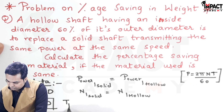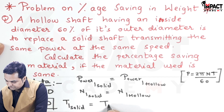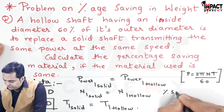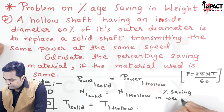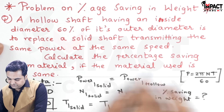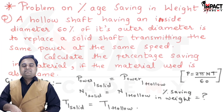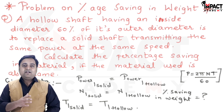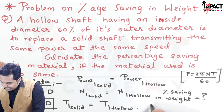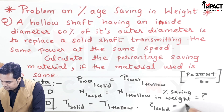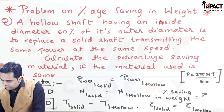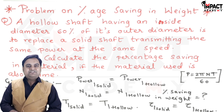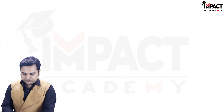The torque transmitted by the solid shaft is the same as the torque transmitted by the hollow shaft. We also need to calculate the percentage saving in material — that is the percentage saving in weight when using the hollow shaft in place of the solid shaft. Since the material used is the same, the shear stress τ for the solid shaft equals τ for the hollow shaft.